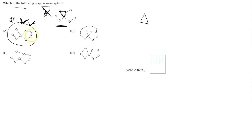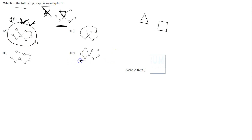Similarly, in the question graph there is no cycle of four vertices, but in option D you can see there is a cycle of four vertices like this, so you can eliminate option D as well.